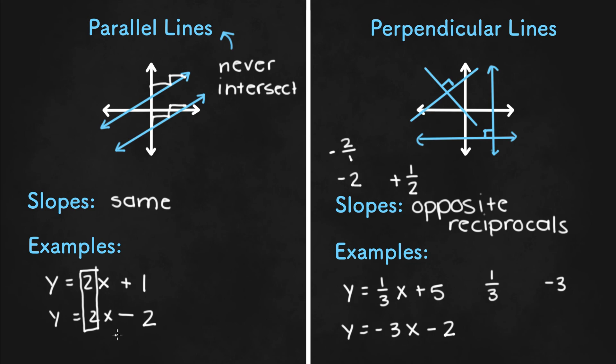So if you're asked which one of these is a parallel line and which one's a perpendicular line, then you would be able to tell by looking at the slopes.